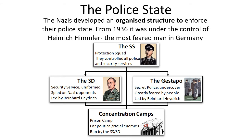OK Year 11, it's now time to look at the organization of the Nazi police state. You can see on this diagram that there are a number of components. First of all, there was the SS, the Protection Squad — they controlled all police and security services. Under them there was the SD, the security service in uniform — they spied on Nazi opponents, led by Reinhard Heydrich. Then you had the Gestapo, the secret police undercover, greatly feared by people, also led by Reinhard Heydrich. And then you've got the concentration camps. We're going to look at each of these elements in turn in a bit more detail.